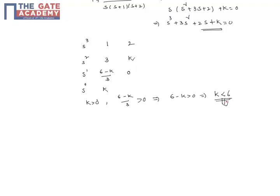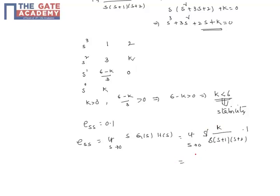One condition is also given: ESS, the velocity error, should be within 10%, so ESS equals 0.1. We know the formula for ESS is limit s tends to 0 of s into G(s) into H(s). This equals limit s tends to 0 of s into 1 by [s(s plus 1)(s plus 2)]. H(s) is 1, so s cancels. Substituting s equal to 0, this becomes K by 2.